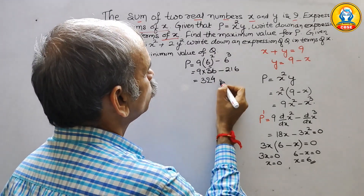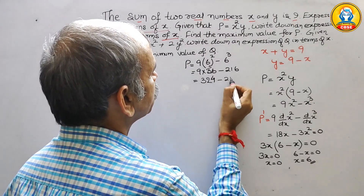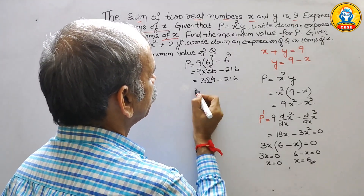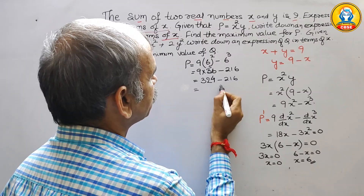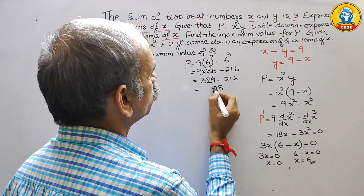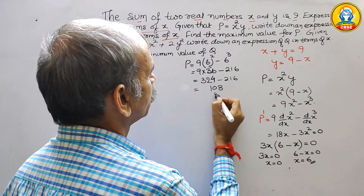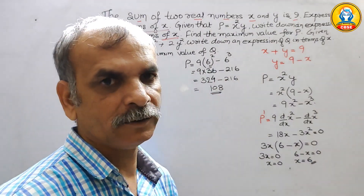324 minus 216 gives us the maximum value of p equal to 108.